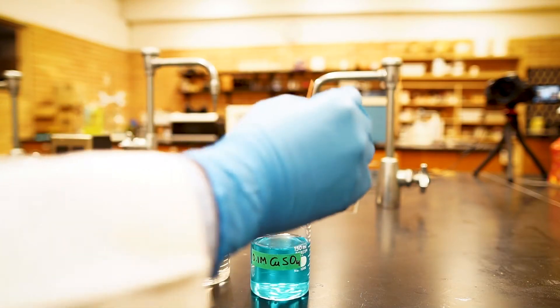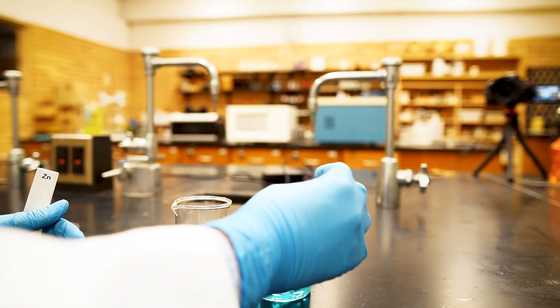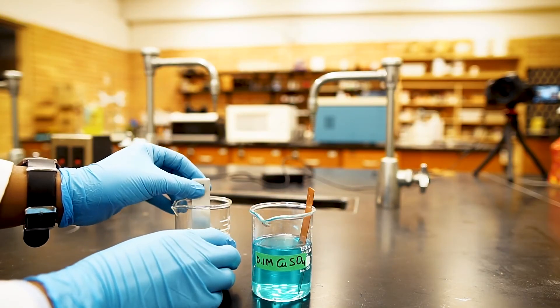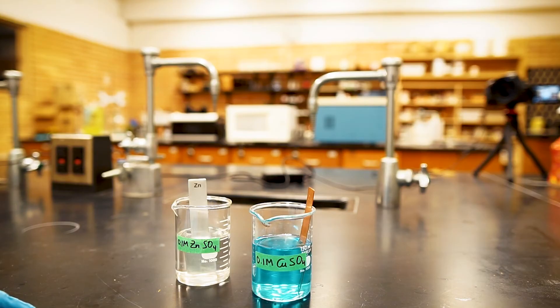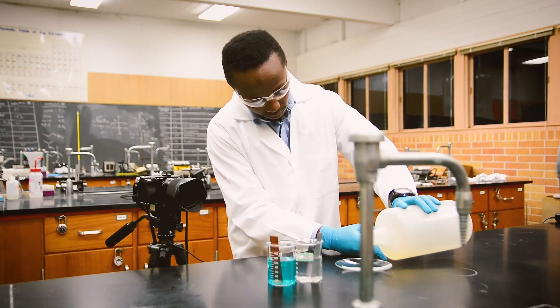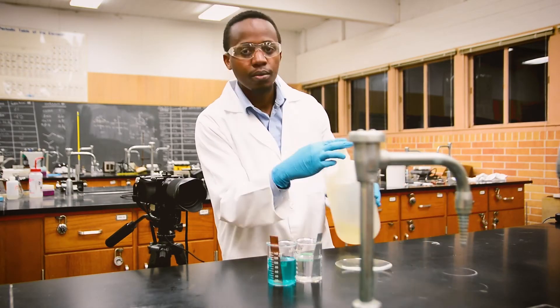We're then going to place the metal electrodes into each solution like this. The zinc metal goes into the zinc sulfate solution, and the copper metal into the copper sulfate solution. We'll then connect the two solutions with a salt bridge. A salt bridge can be a U-tube that's filled with a salt solution, but it can also be a paper towel that has been dipped in the salt solution.